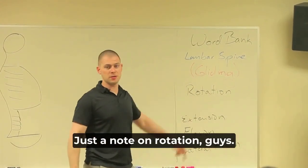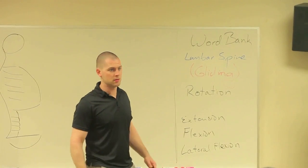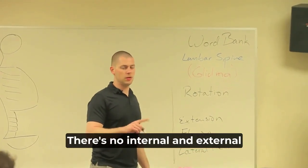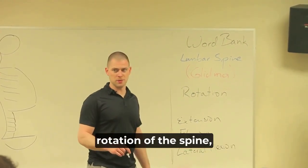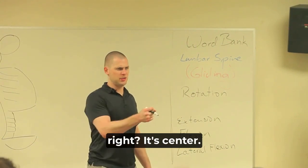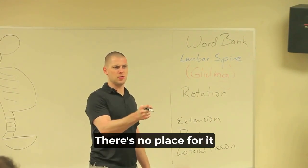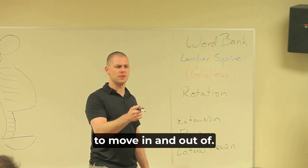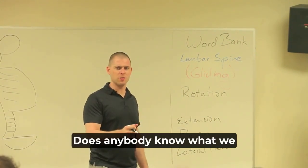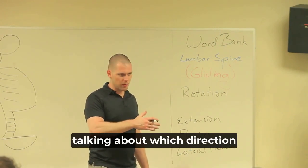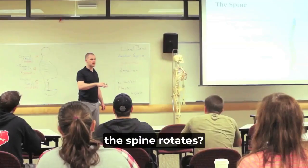Just a note on rotation: there's no internal and external rotation of the spine. It's centered — there's no place for it to move in and out of. Does anybody know what we usually refer to when talking about which direction the spine rotates?